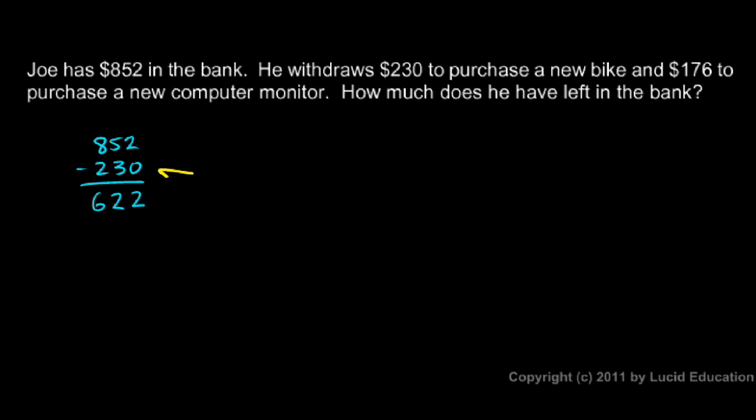So that's how much money he has left after the first withdrawal. After taking away the $230 right there. Then from that $622 he takes away another $176. So after the first withdrawal there's $622 left in the bank.